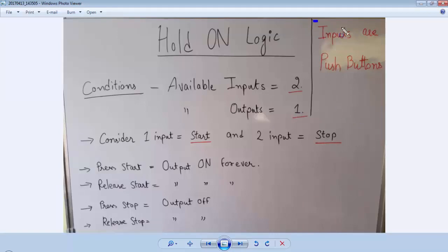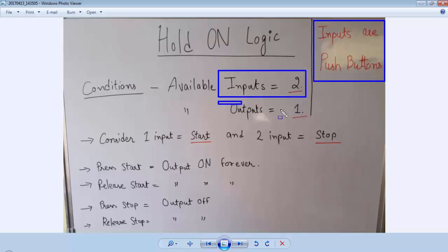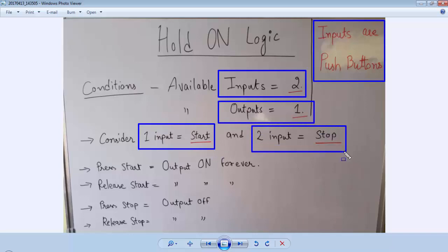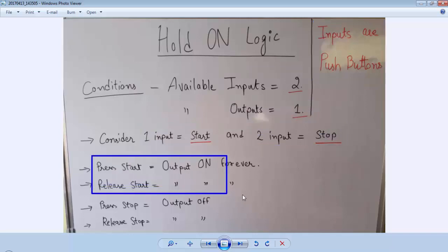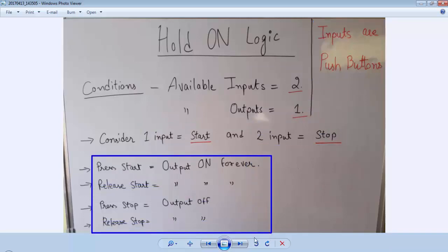For a hold on logic, first you have to consider that all the inputs are push buttons. We need two inputs and one output — one input as a start button and the second as a stop button. For the initial condition the output will be off. Press the start button to turn on the output, and even after releasing the start button the output should remain on. To turn off the output you press the stop button, and even after releasing it the output should remain off.